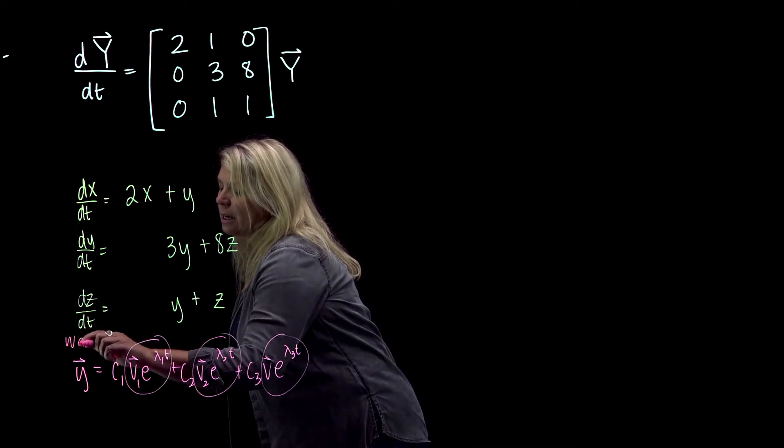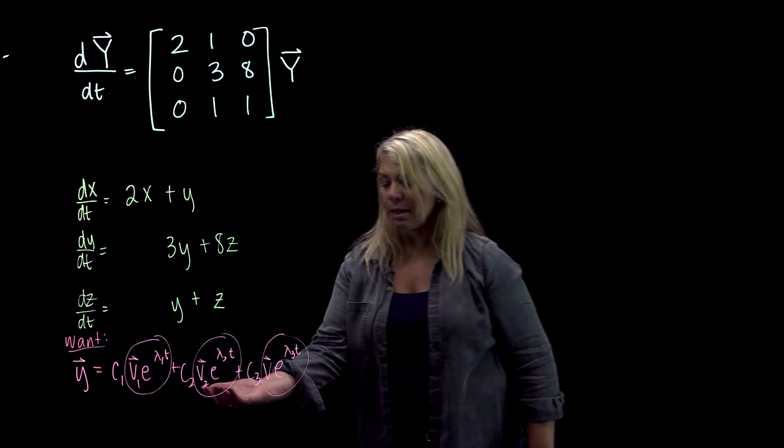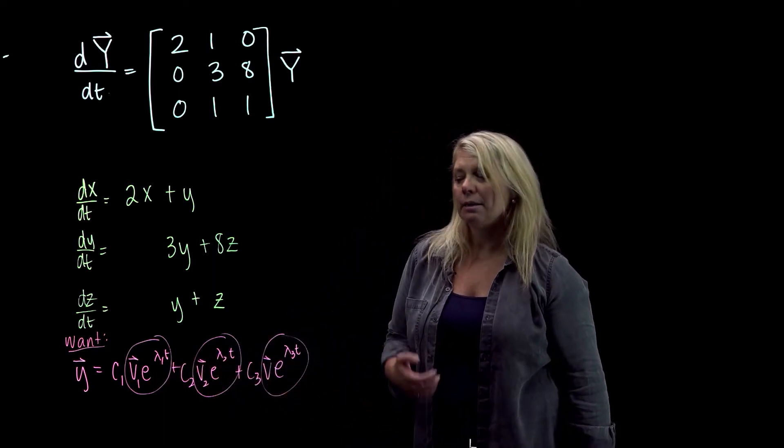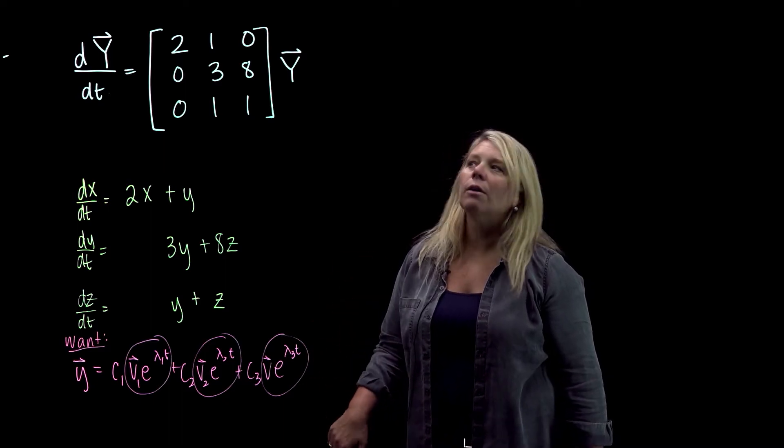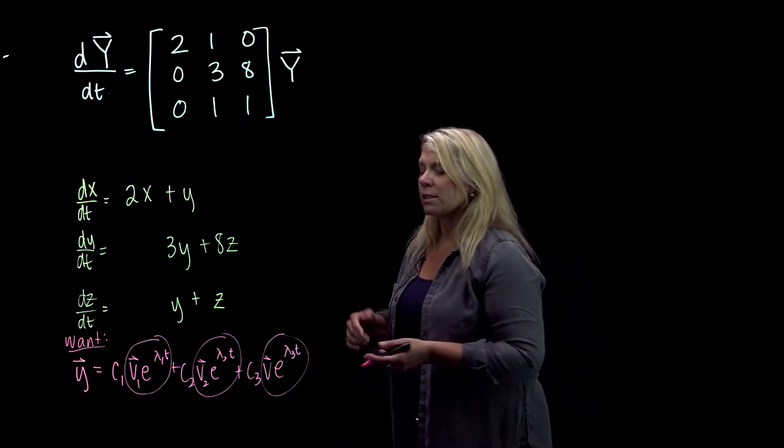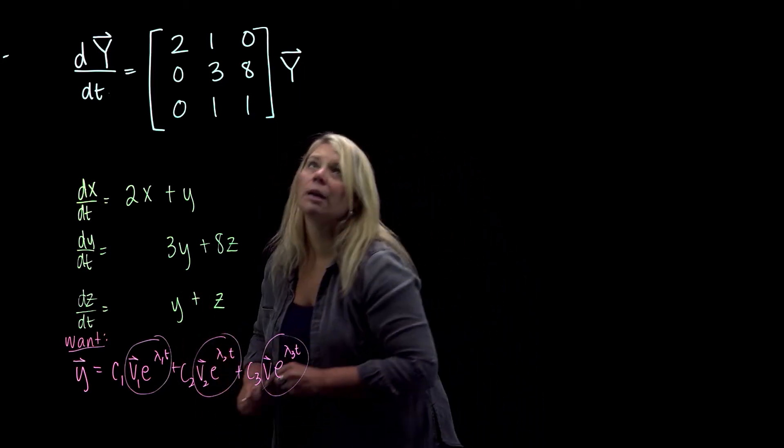The difficulty arises when you get to this point and maybe these things that you've got here are not linearly independent and then you don't have enough to really span the eigenspace. So let's go ahead and see what happens here, though. I'm going to start by finding the eigenvalues and associated eigenvectors for my coefficient matrix.